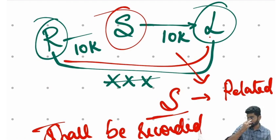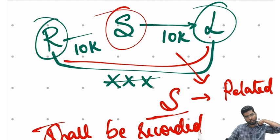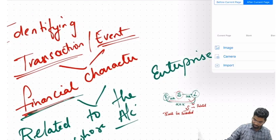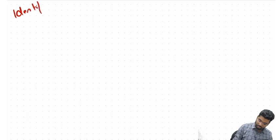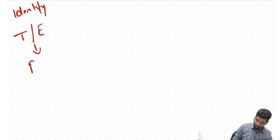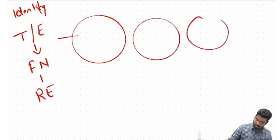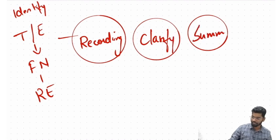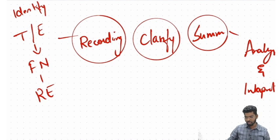So we shall be recording transactions and events of financial character which are related to the business. To recap: accounting is about identifying transactions or events of financial nature related to an enterprise, then recording, classifying, and summarizing — and finally analysis and interpretation.